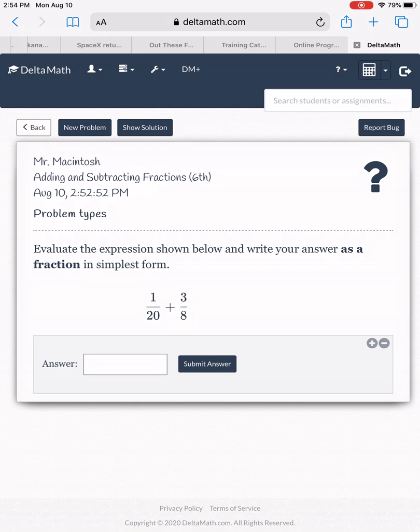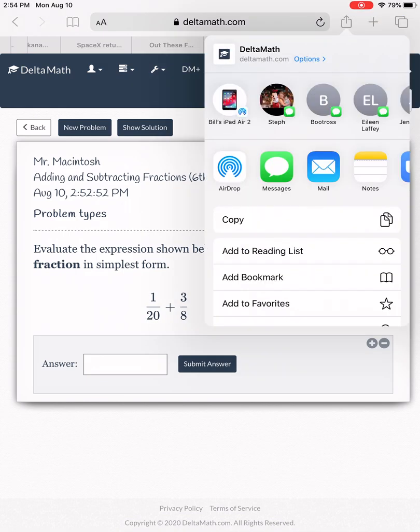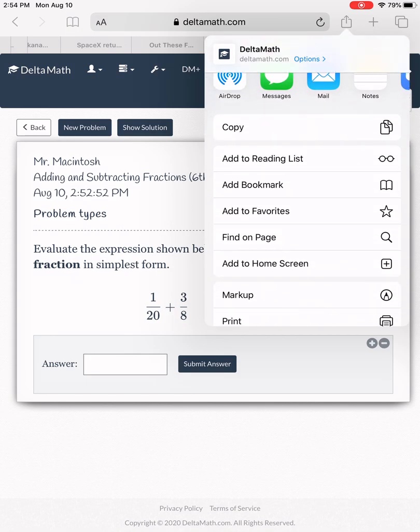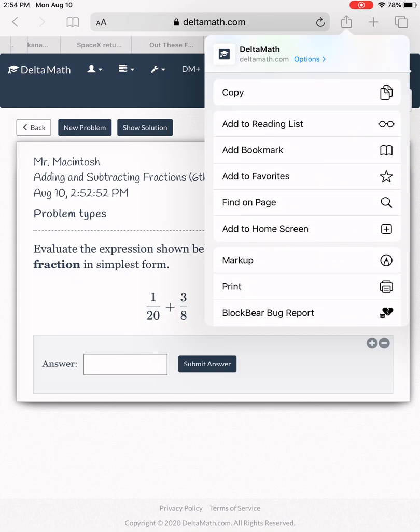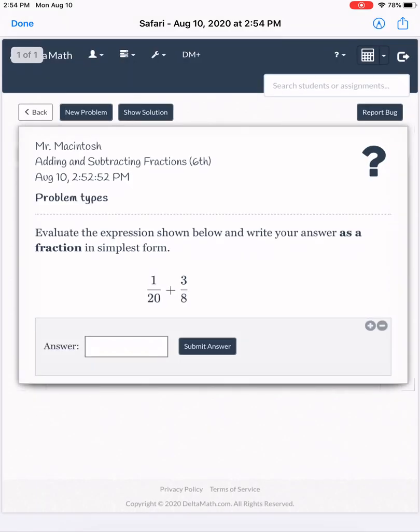So I'm going to use this square up here, the square with the up arrow in the top right corner. I can go ahead and mark up. Here's markup. It goes ahead and automatically makes it into a page that I can mark up.